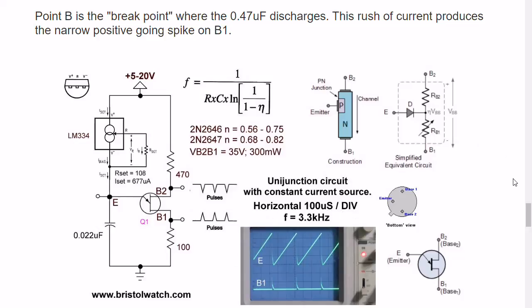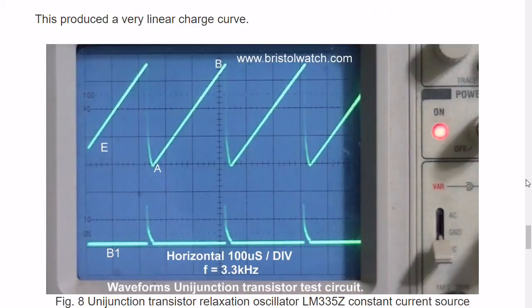Let's move on down. Here is the representation on an oscilloscope. Here is my charge curve, very linear. A lot of circuits need this linear curve. It reaches the break point, rapidly discharges the capacitor, and there is my spike. And that spike in the next video is going to be used to drive an SCR.